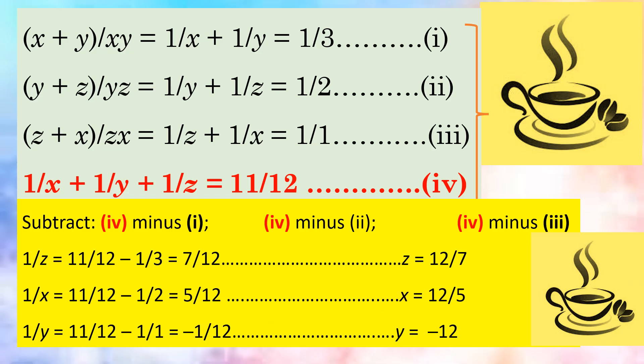From the sum of 1 by x plus 1 by y plus 1 by z, subtract the value of 1 by x plus 1 by y, and we get the value of 1 by z.